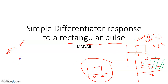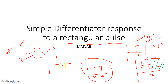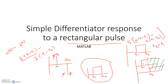So basically our result will be delta(T - T1) minus delta(T - T2). How will the plot look? At T equal to T1 there will be one spike due to delta(T - T1), and at T equal to T2 there will be another spike, but with a minus sign so it will go in the downward direction. Here the amplitude will be one in both cases. If the whole expression is multiplied by, suppose, five, then the amplitude will be five and minus five. So this is the differentiation of the rectangular pulse.